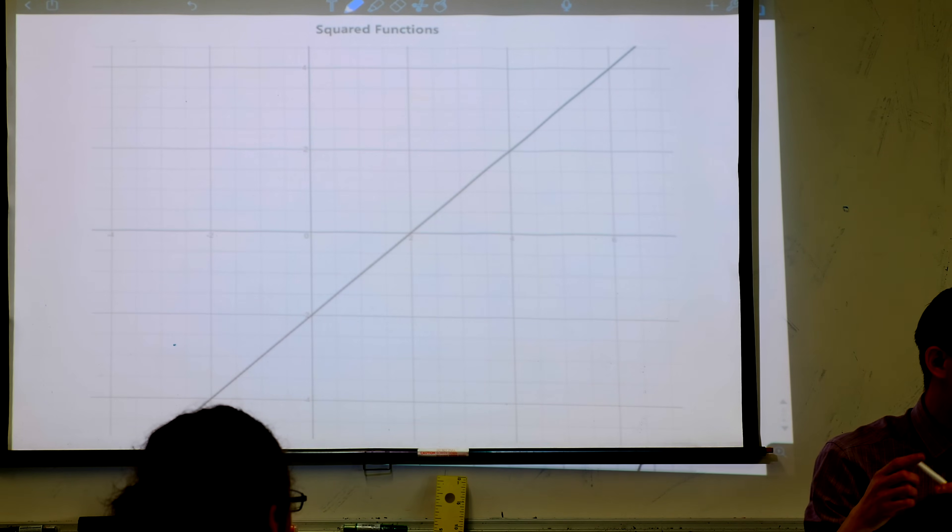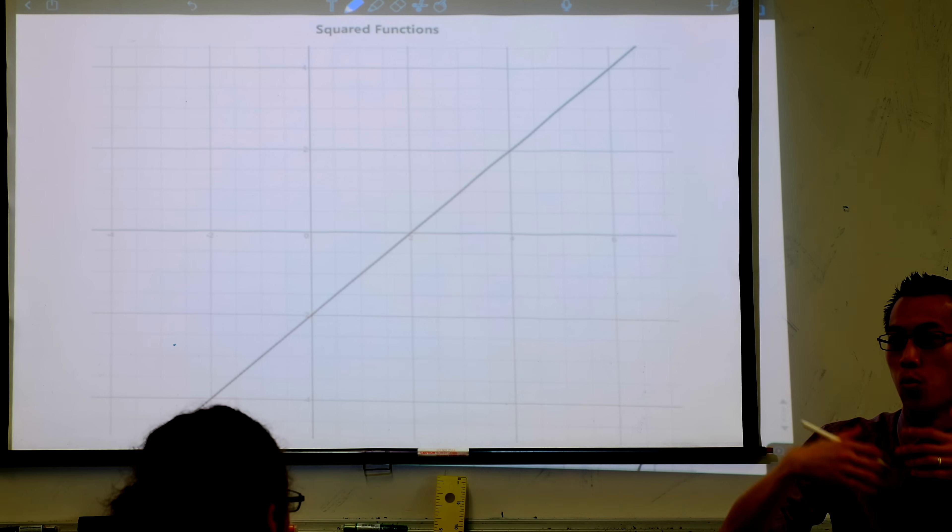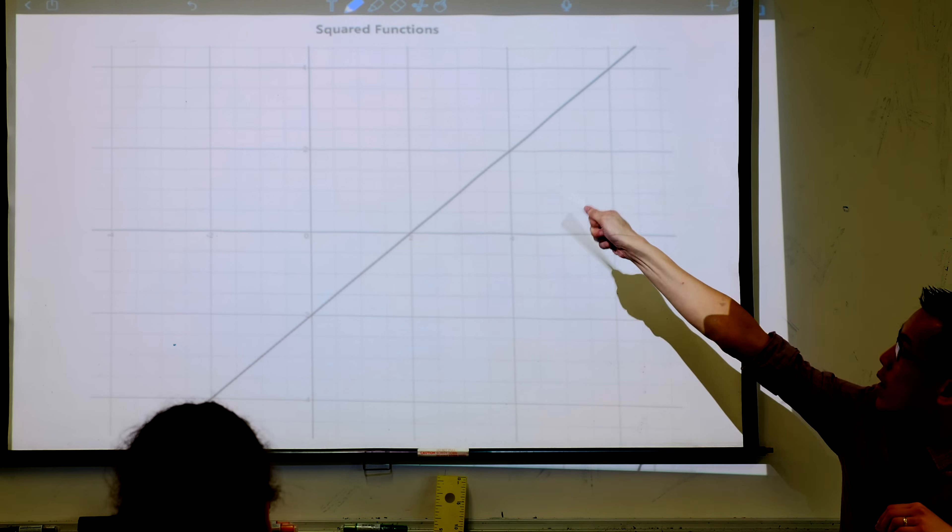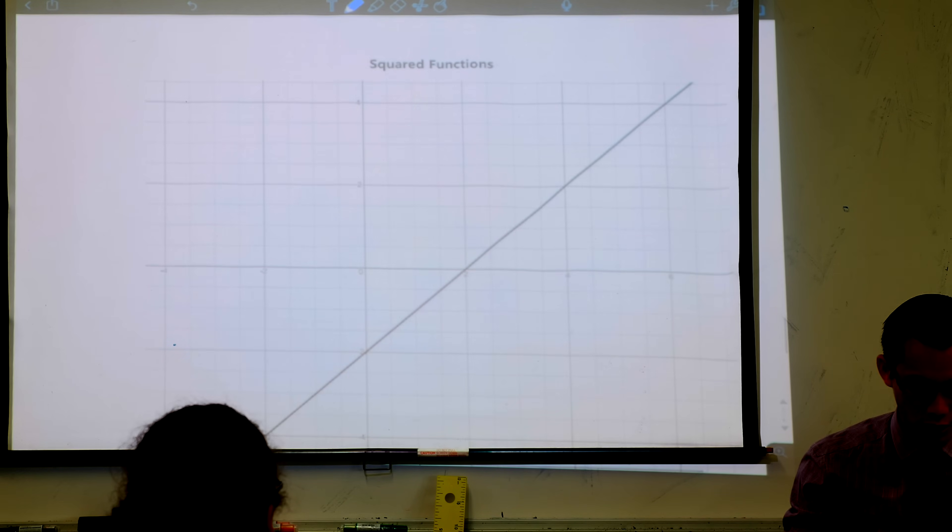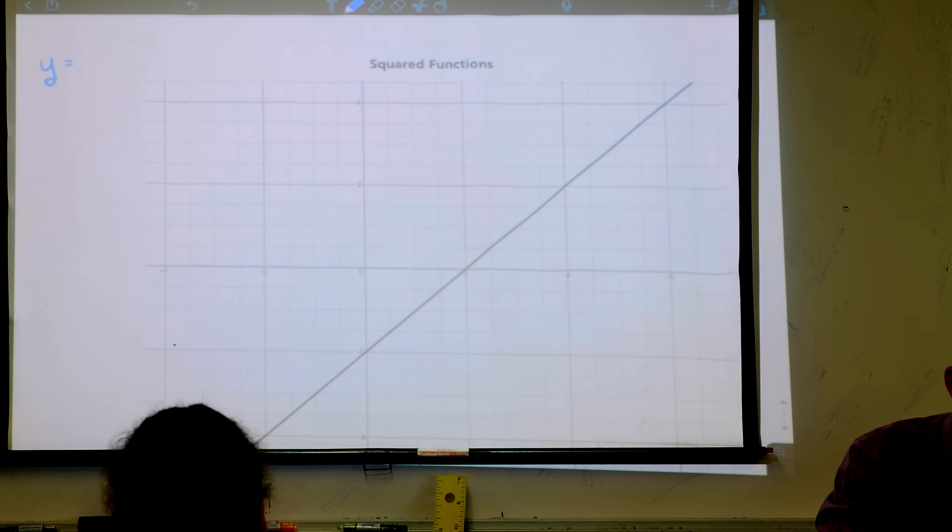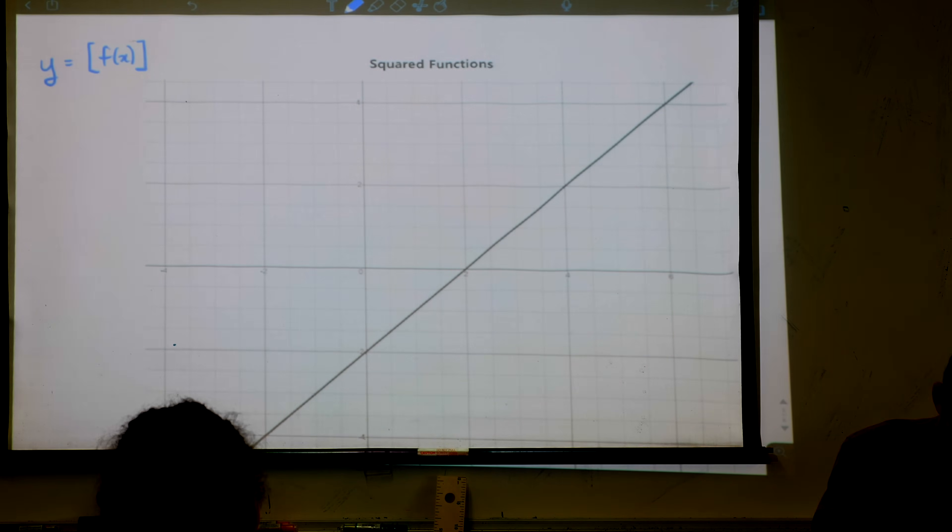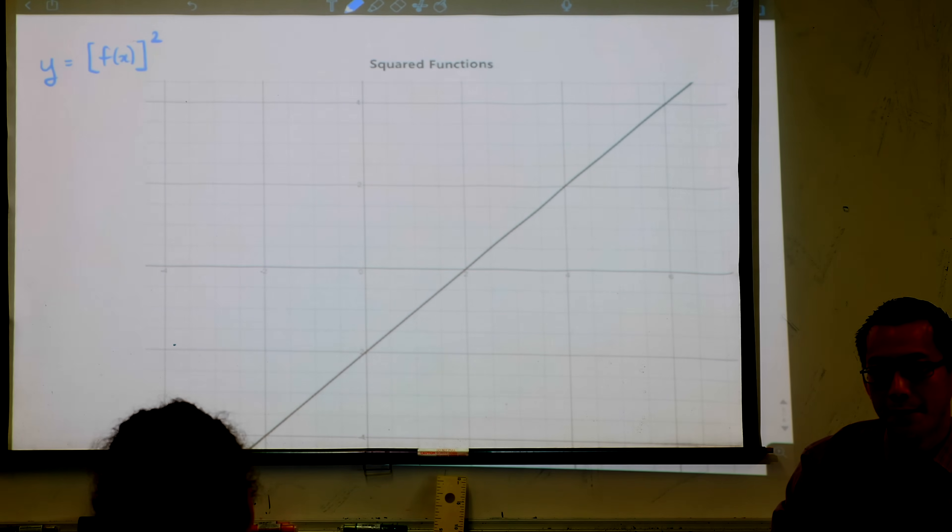We looked at reciprocal functions before, so this is y equals 1 over f of x. We are now going to shift our focus to squared functions. If you want to write this in your top left hand corner, this is y equals taking an entire function and then multiplying it by itself, squaring it.